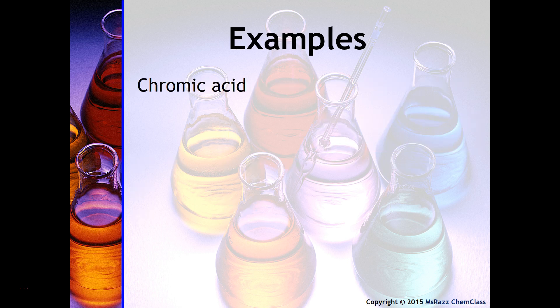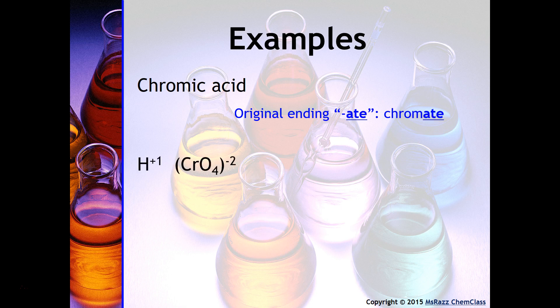Here's another example: ask yourself what the original anion must have been for chromic acid. The 'ate something icky' mnemonic helps here — if the acid ends in -ic, the original ending must have been -ate, so we must be talking about the chromate ion, CrO₄²⁻.